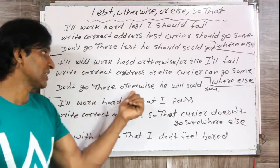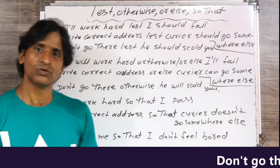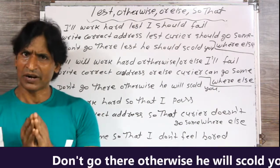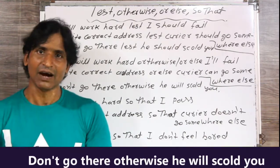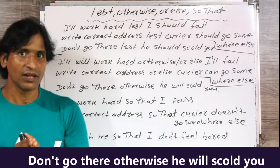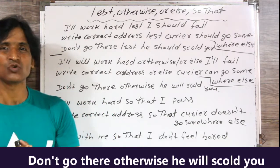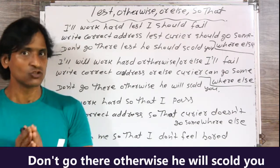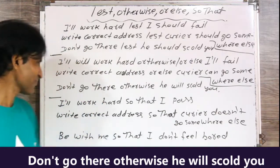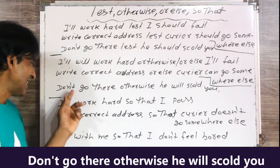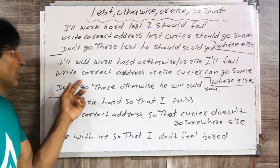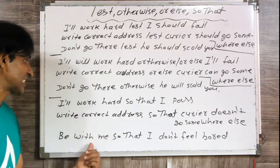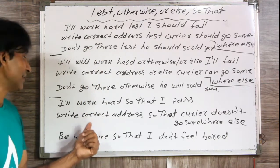Third sentence: 'Don't go there, otherwise / or else, he will scold you.' वहाँ मत जाओ, वरना वो तुम्हें डाँटेगा. So those were the three 'otherwise/or else' sentences. Now the last three sentences use 'so that'.